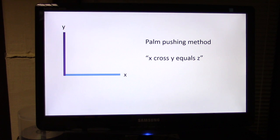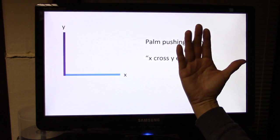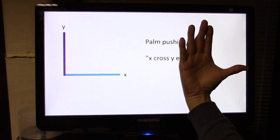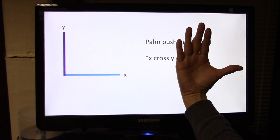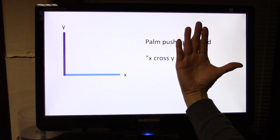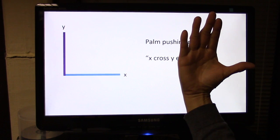Finally, there's the palm pushing method. What you have to do is start with a flat hand, point your thumb in the direction of X, point your other fingers in the direction of Y, and then the palm pushes in the direction of Z.